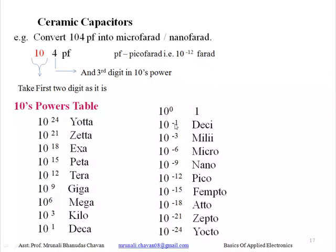Starting with 10 raised to 0, going on the positive side: 10 raised to 0, 10 raised to 1, 10 raised to 3, and so on up to 10 raised to 24. These powers of ten are identified as follows: 10 raised to 1 is deka, 10 raised to 3 is kilo, 10 raised to 6 is mega, 10 raised to 9 is giga, 10 raised to 12 is tera, 10 raised to 15 is peta, 10 raised to 18 is exa, 10 raised to 21 is zeta, and 10 raised to 24 is identified as yotta.